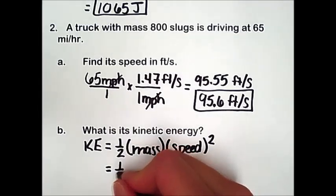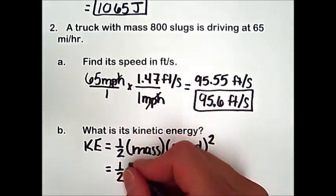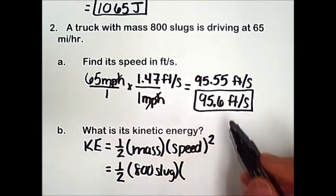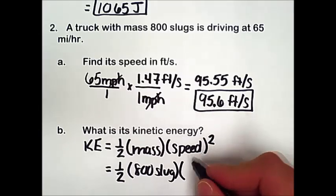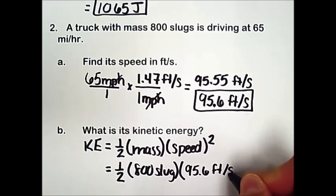So in this problem, our mass is 800 slugs, and then the speed we found in the previous part to be 95.6 feet per second.